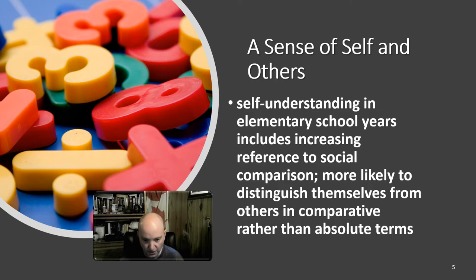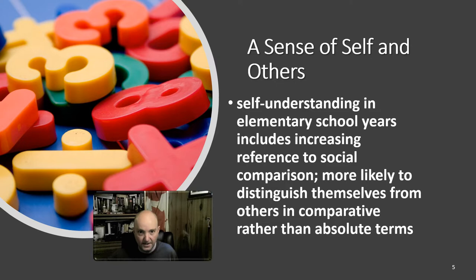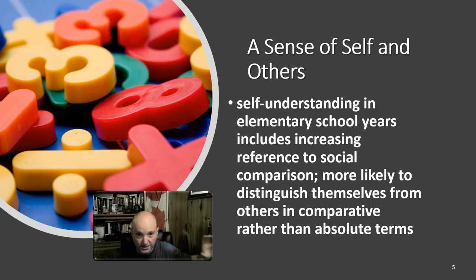Two main differences are evident when looking at how kids describe themselves early in childhood versus middle childhood. If you ask a young child to tell you about themselves versus an older kid, the types of things they talk about are different. The younger kid is more likely to talk about physical characteristics; the older kid becomes more likely to talk about psychological traits. The first difference is a shift away from concrete physical things towards more psychological things.